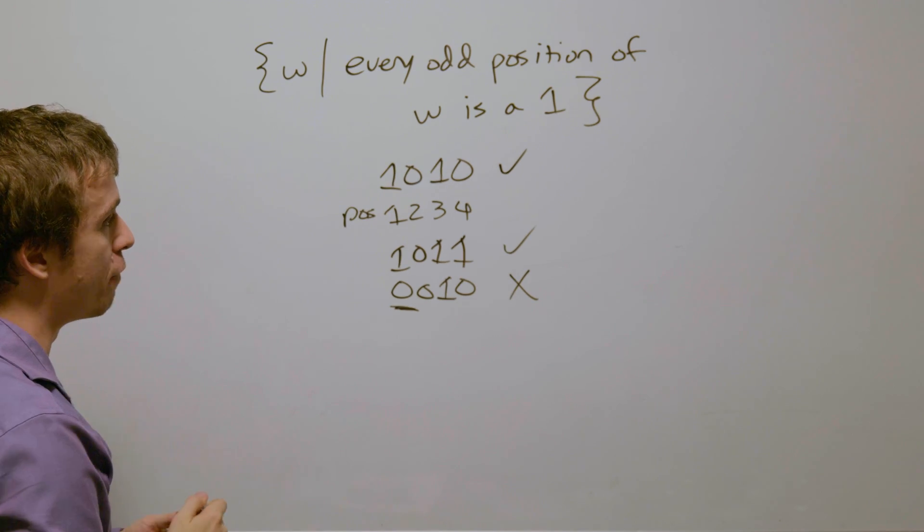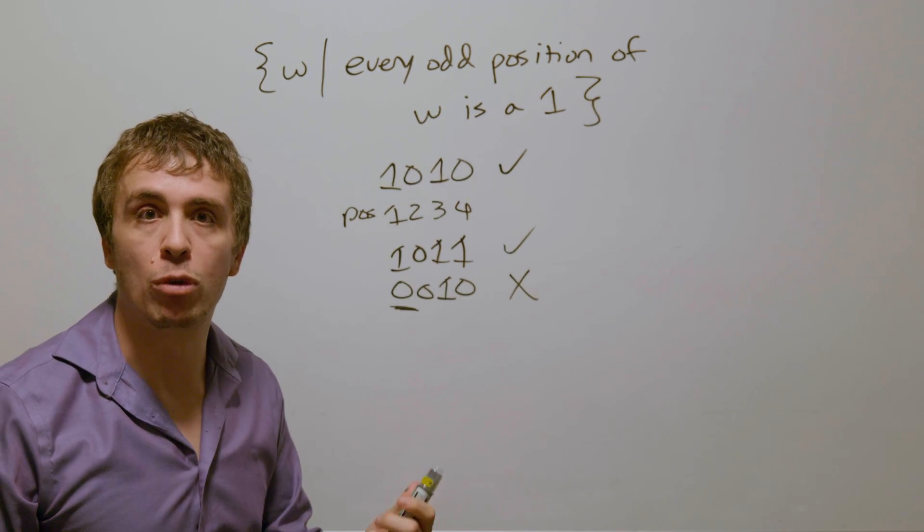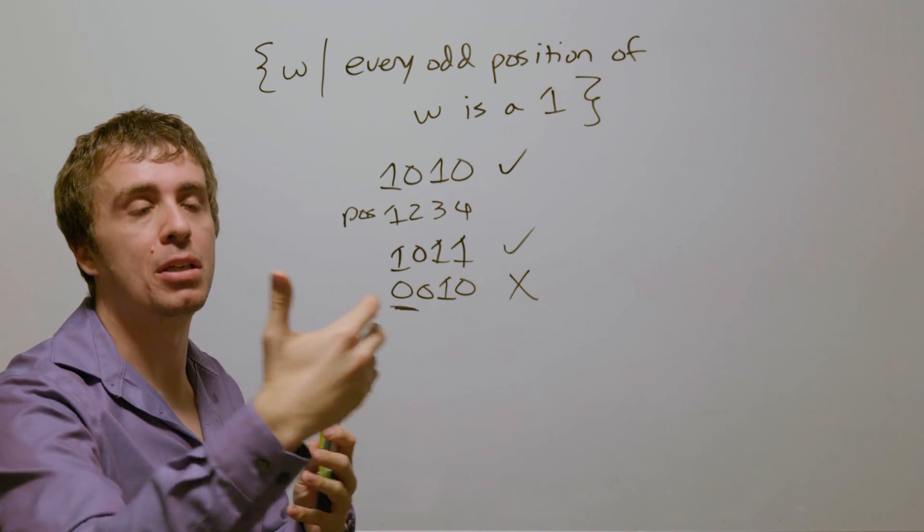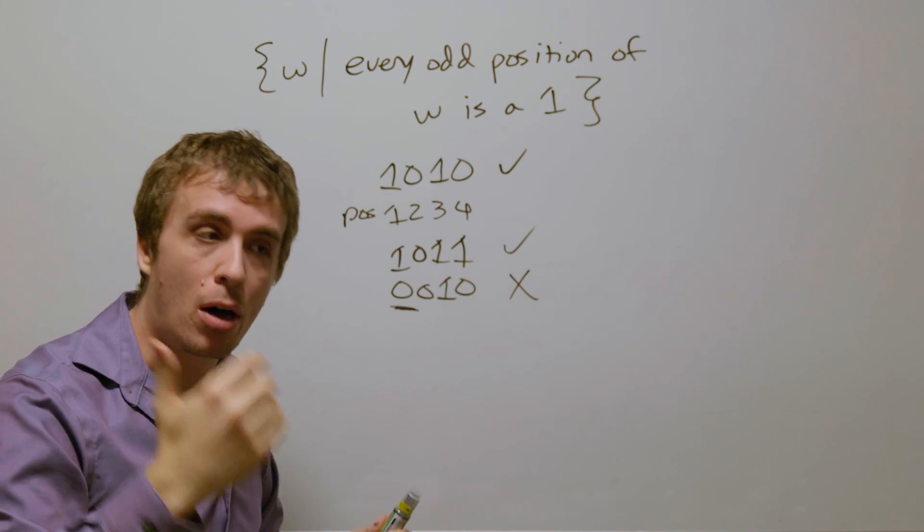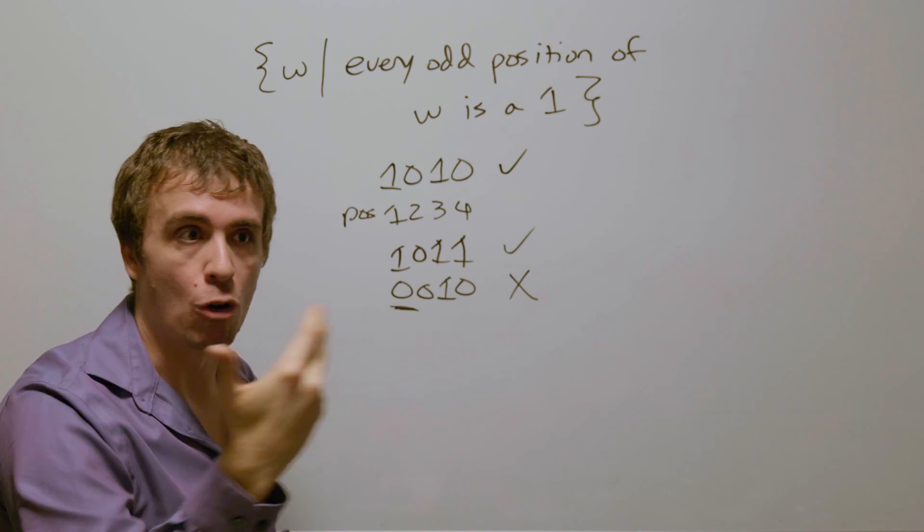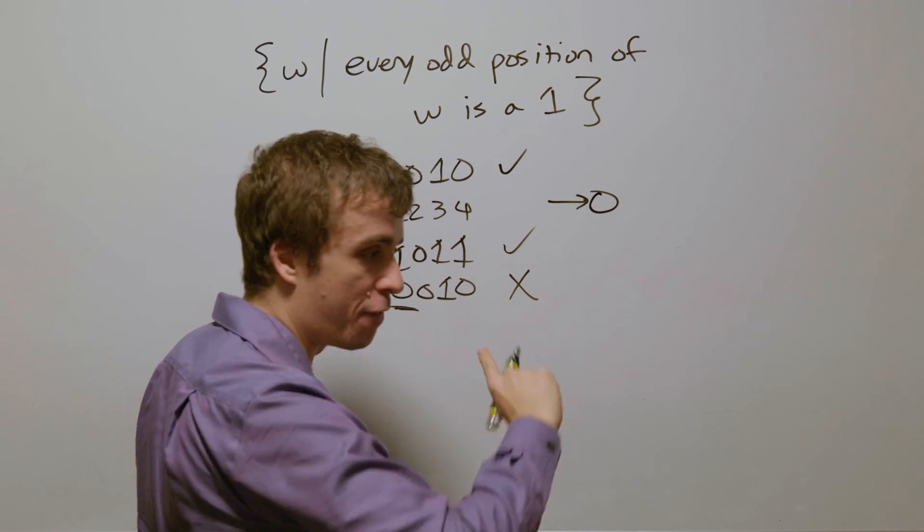So how are we going to make a DFA for this? Well, we need some notion of odd position, which means odd length, kind of. It's not necessarily that it's odd length, but it's that the odd comes up, which means that we have odd and evenness playing a role here. So we need some way of making a DFA for odd and even.